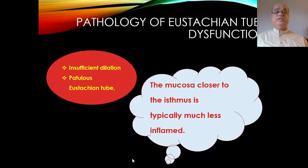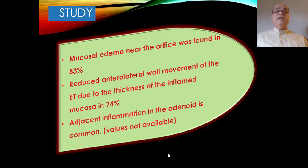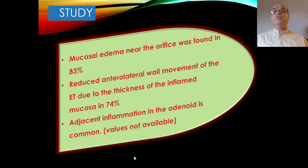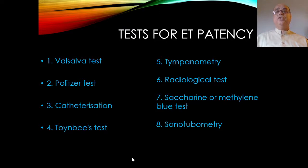The mucosa closer to the isthmus is typically much less inflamed, while mucosa toward the nasopharyngeal end is more commonly involved. Failure of proper tubal valve closure leads to patulous Eustachian tube — the next common finding on endoscopy. Inflamed torus tubarius and lymphoid hyperplasia causing obstruction at the nasopharyngeal end is found in 83% in many series. Reduced anterolateral movement due to thickness of inflamed mucosa is found in 74% of cases, with adjacent adenoid inflammation being very common.